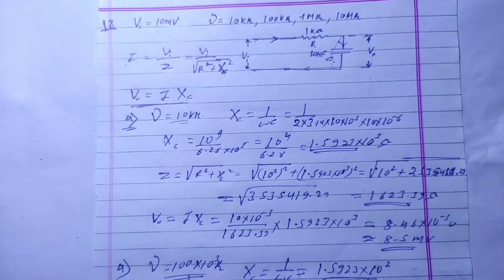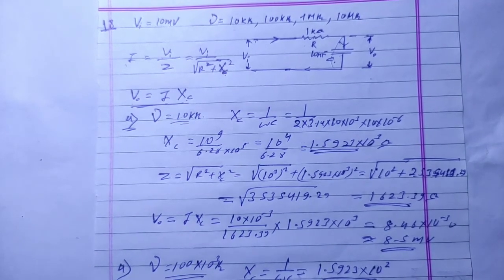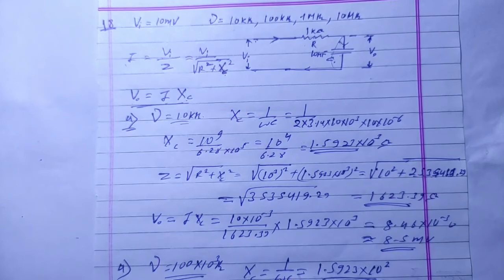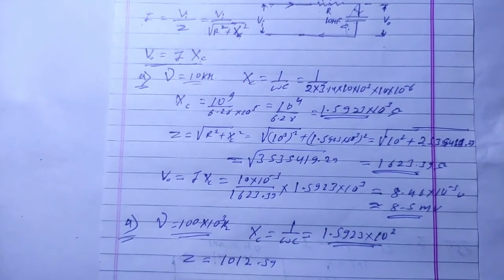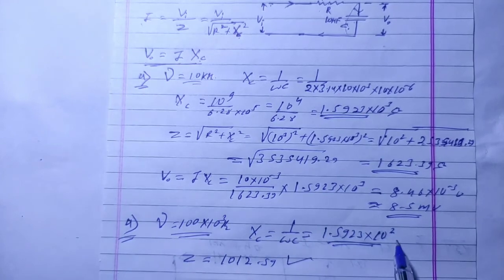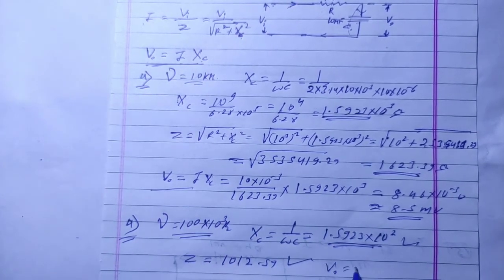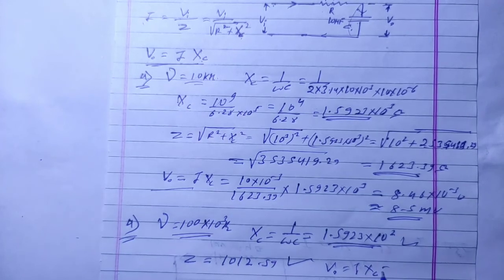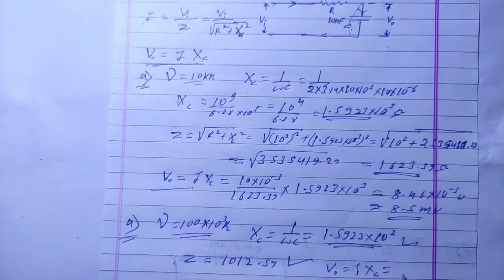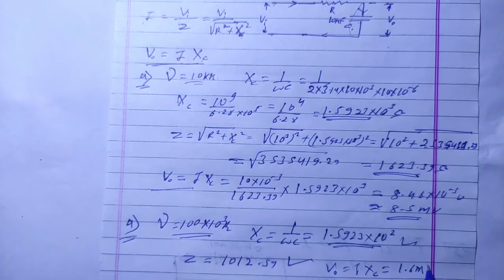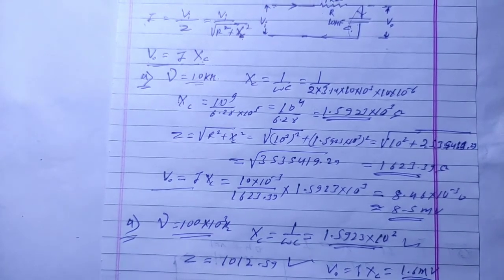Going back to find Z: Z is approximately 1012.59 ohms. Then the output potential, I into XC, gives approximately 1.6 millivolt for the 100 kHz case.